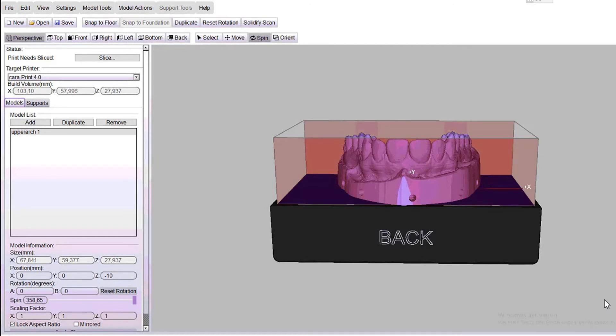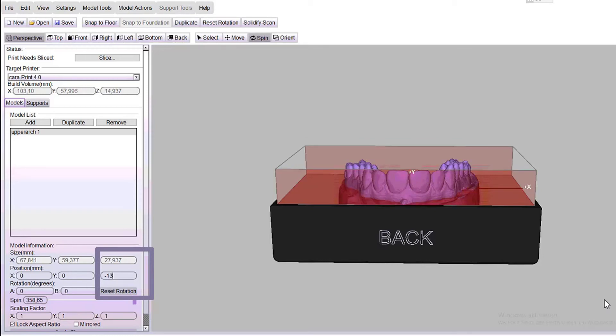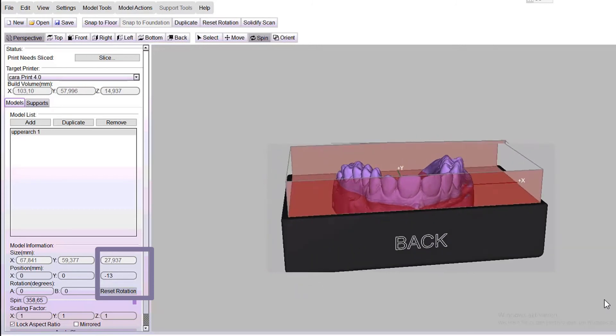On the left side, you will find the possibility to position your data record via the number fields. Make sure to subtract the values of the record height in the positioning in the minus area. Areas that penetrate the print platform are not printed.